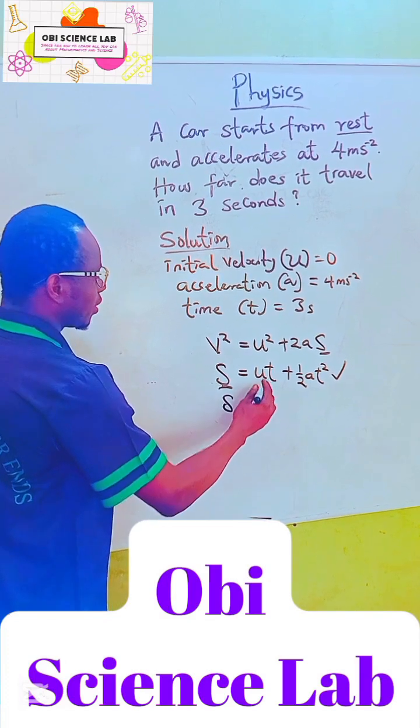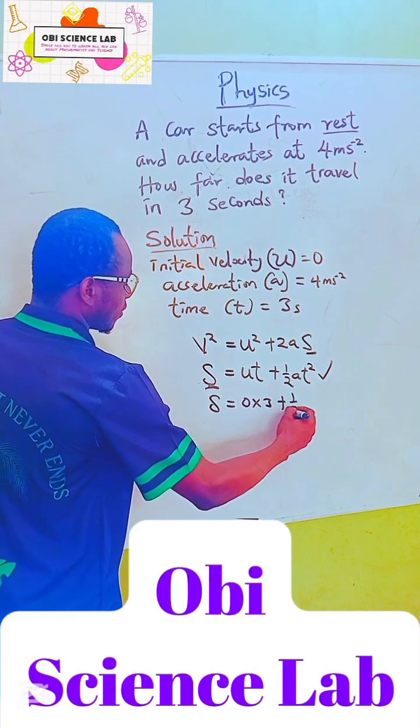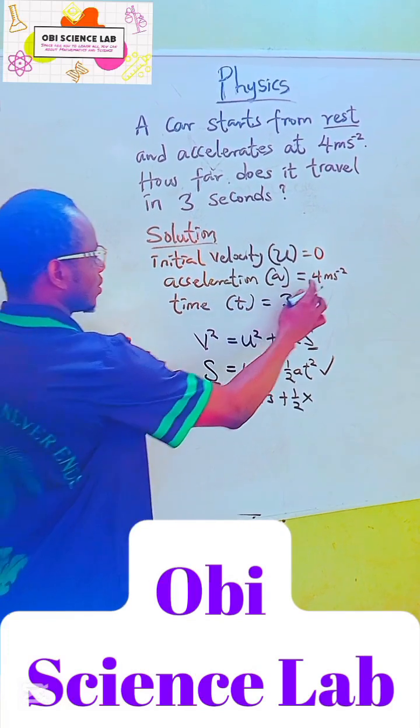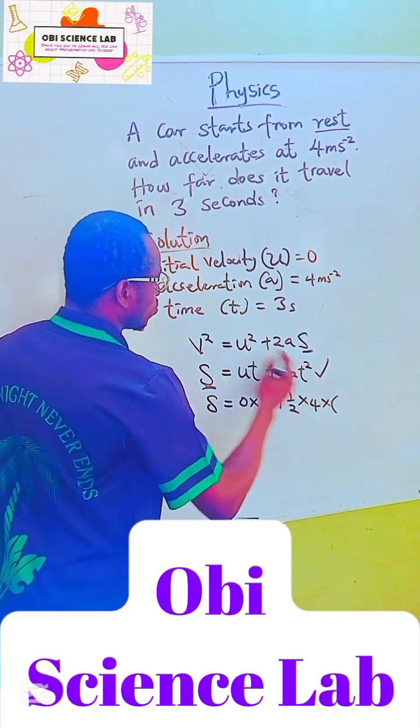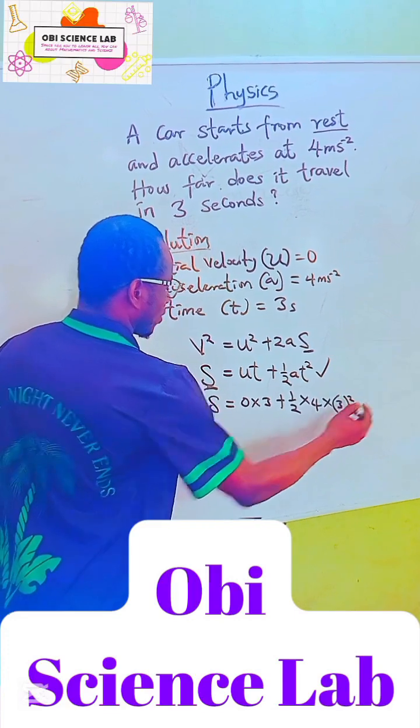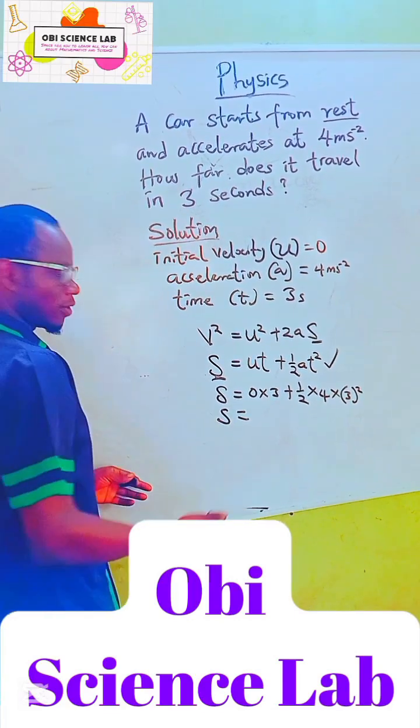Distance becomes initial velocity, which is zero, times time, which is three, plus one over two times acceleration, which is four, times t squared, which will now be three squared. So we're going to have distance to be equal to zero times three, which is of course zero.